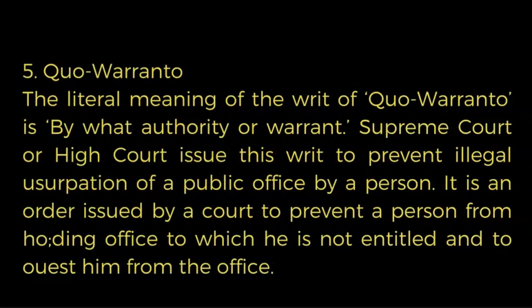The fifth and last one is Quo Warranto. The literal meaning of the writ of Quo Warranto is 'by what authority or warrant.' The Supreme Court or High Court issues this writ to prevent illegal usurpation of a public office by a person. It is an order issued by a court to prevent a person from holding an office to which he is not entitled, and to oust him from that office.